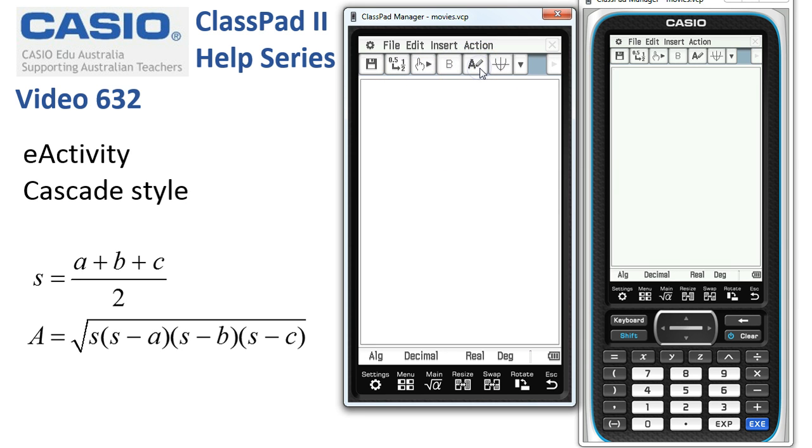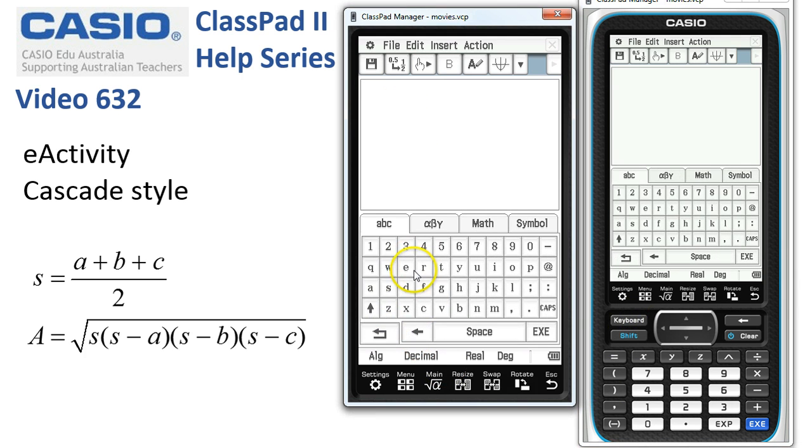We're going to start with some text to explain what's going on. We could get the keyboard up and the ABC tab and type through here. I'm just going to use my computer keyboard to start with. Edit Side Lengths as our first instruction and tap Execute.